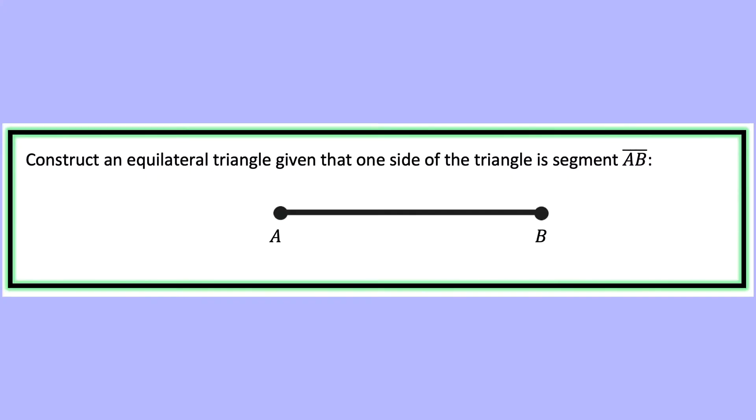So let's look at our question. They want us to construct an equilateral triangle given that one side of the triangle is the length of segment AB.